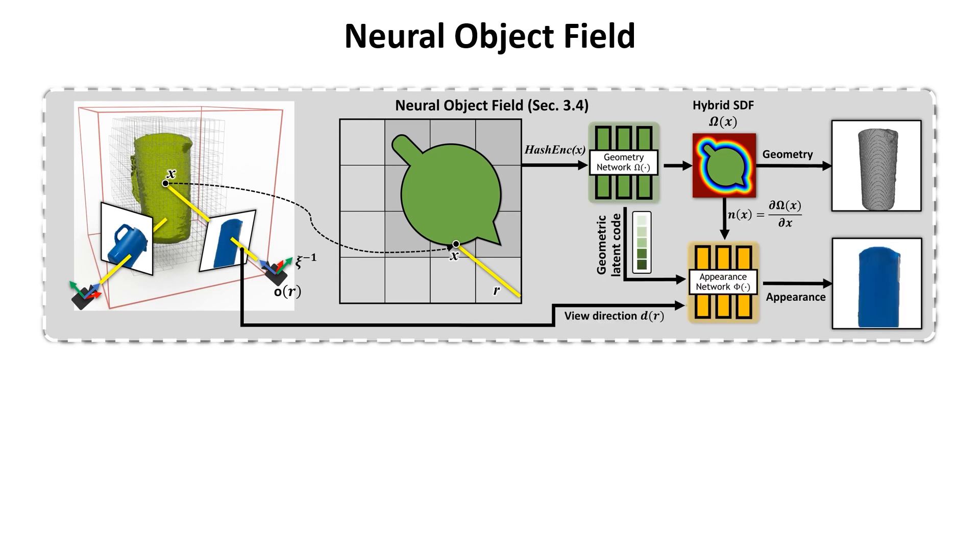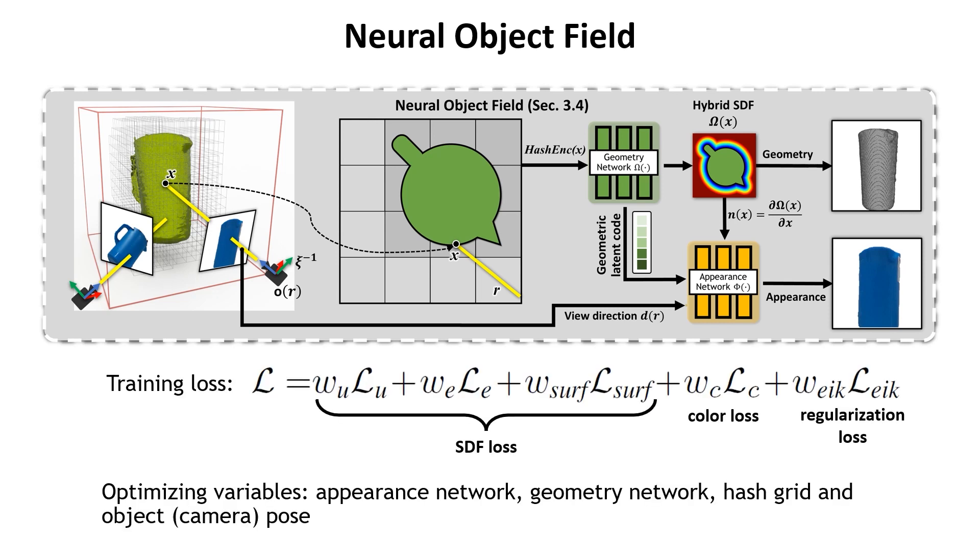We use another appearance network to model the texture. It takes the geometric latent code from the geometry network, the normal from SDF, and the viewing direction from previously estimated object pose, and renders the color. The training loss includes the supervision from SDF, color, and Eikonal regularization. The optimizing variables include appearance and geometry network, the multi-resolution hash grid, and the object poses of each memory frame.